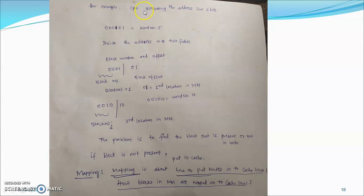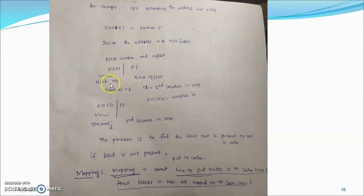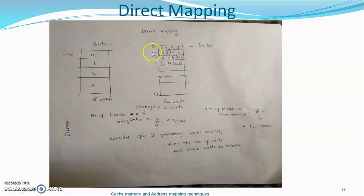Suppose the CPU generates the 6-bit address 000101, which represents word number 5. The address is divided into two fields: the first four bits represent the block number and the last two bits represent the offset. So 0001 represents block number 1 and 01 represents the second location. Words 0 through 15 are placed in the main memory, and word 5 is positioned at the second location within block number 1.